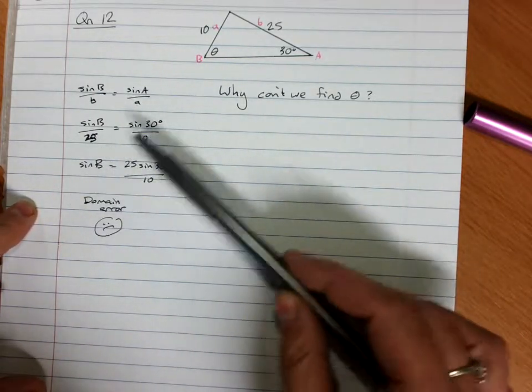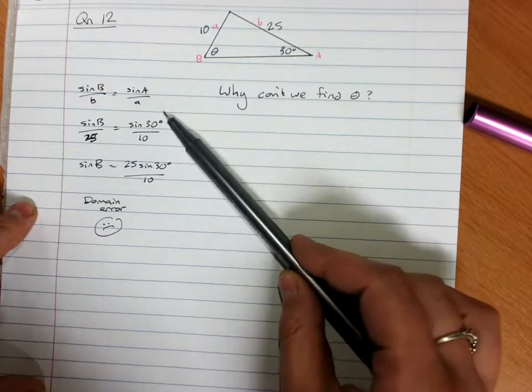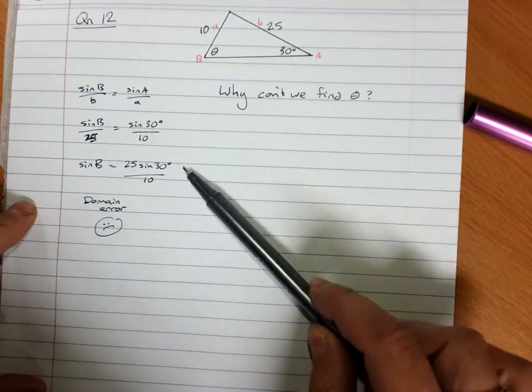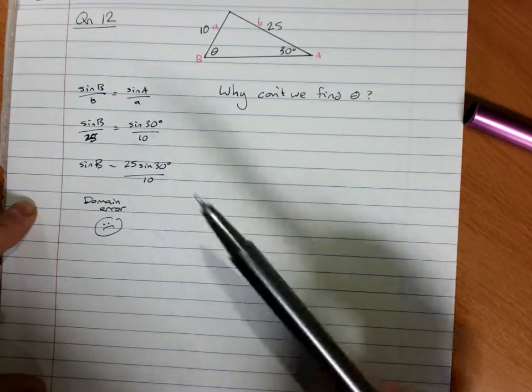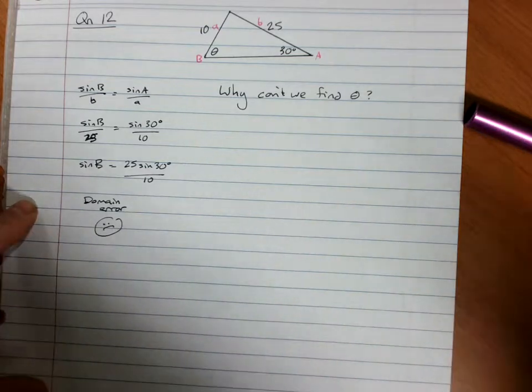And you've mostly discovered that we label it, we do the sine rule, we get this far, and we get a domain error, and we need to be able to explain why.